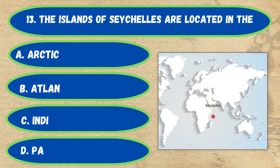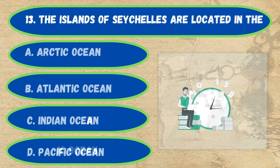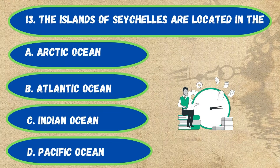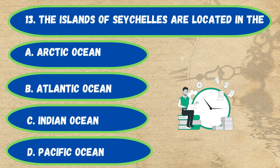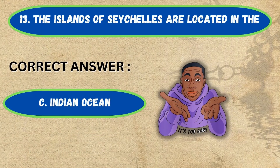Question number 13. The island of sea shells are located in: option A, Arctic Ocean; B, Atlantic Ocean; C, Indian Ocean; D, Pacific Ocean. The correct answer is option C, Indian Ocean.